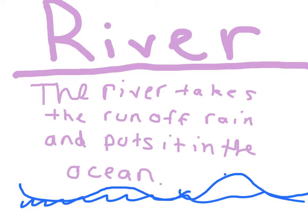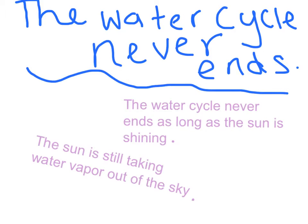River. The river takes the runoff rain and puts it in the ocean. The water cycle never ends as long as the sun is shining. The sun is still taking water vapor out of the sky.